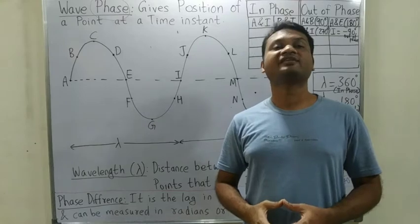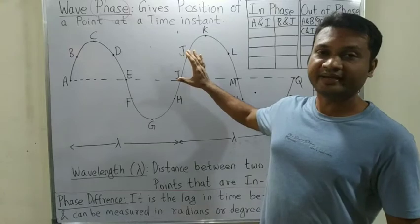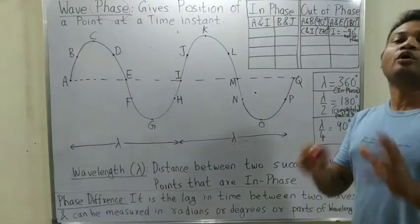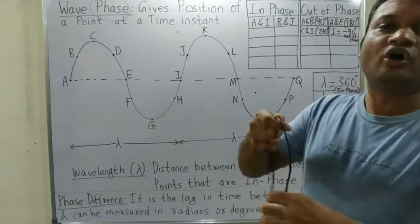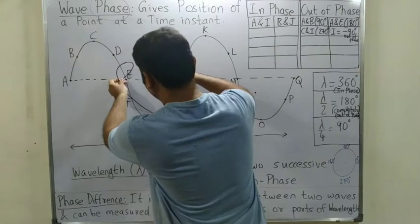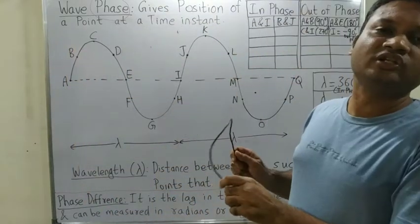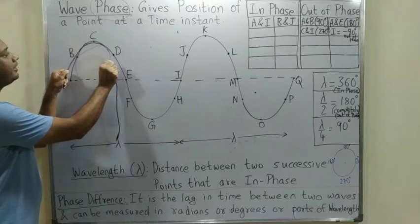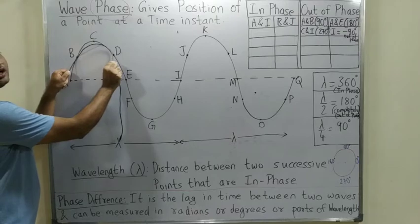Before we try to understand phase, first we should remind ourselves which particles are going up in this wave and which particles are going down. As I showed you in the previous section using a wire, the crest is at point C. C point is the highest point of the crest.